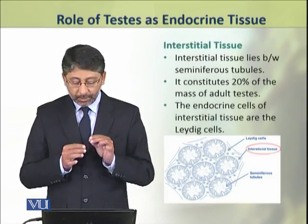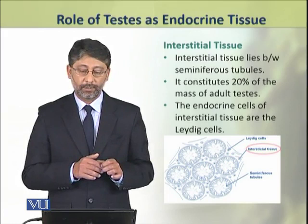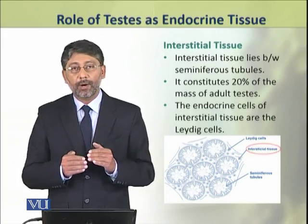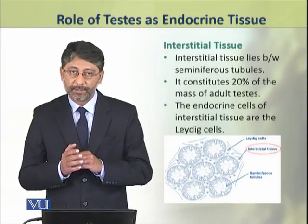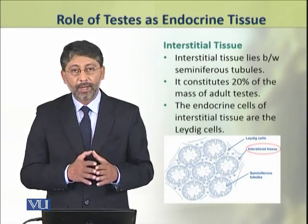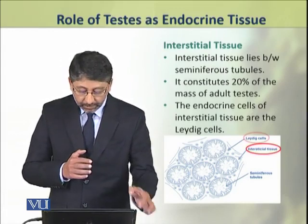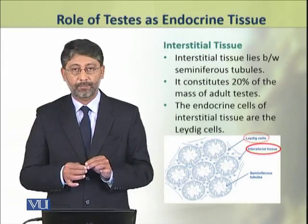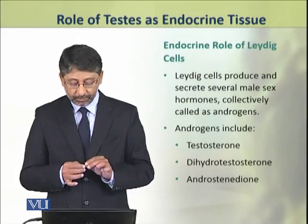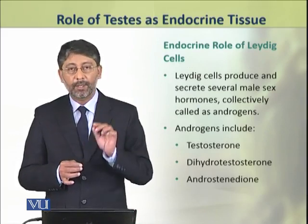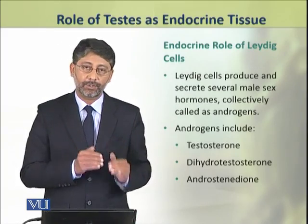The interstitial tissue lies between the seminiferous tubules and constitutes about 20% of the mass of the testes. The endocrine cells present in the interstitial tissue are the Leydig cells. Leydig cells produce and secrete male sex hormones collectively called androgens.